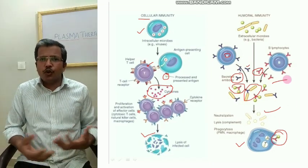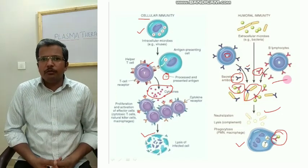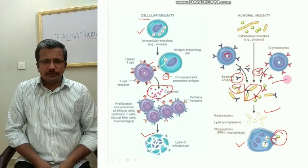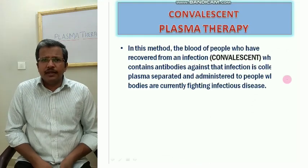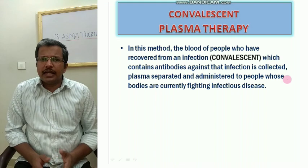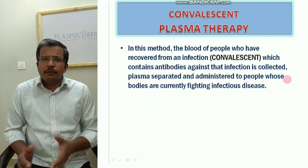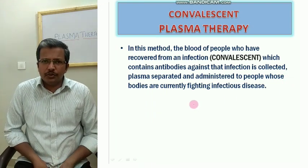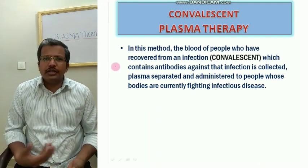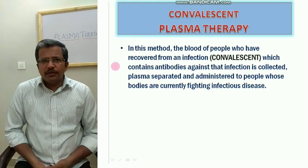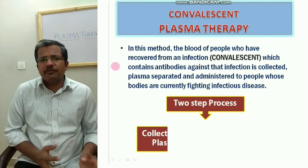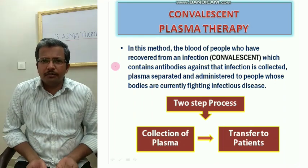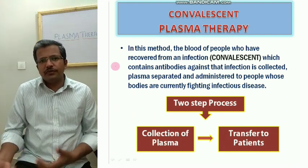Now we are thinking about COVID-19 and how plasma therapy will work against it. Plasma therapy is a medical procedure where plasma containing antibodies, collected from a patient recovered from an infection, is transfused into a person who is currently undergoing that particular infection to treat that disease. There are two main steps: first, collection of plasma with antibodies; and second, transfusion of that plasma into the patient who is suffering from the infection.